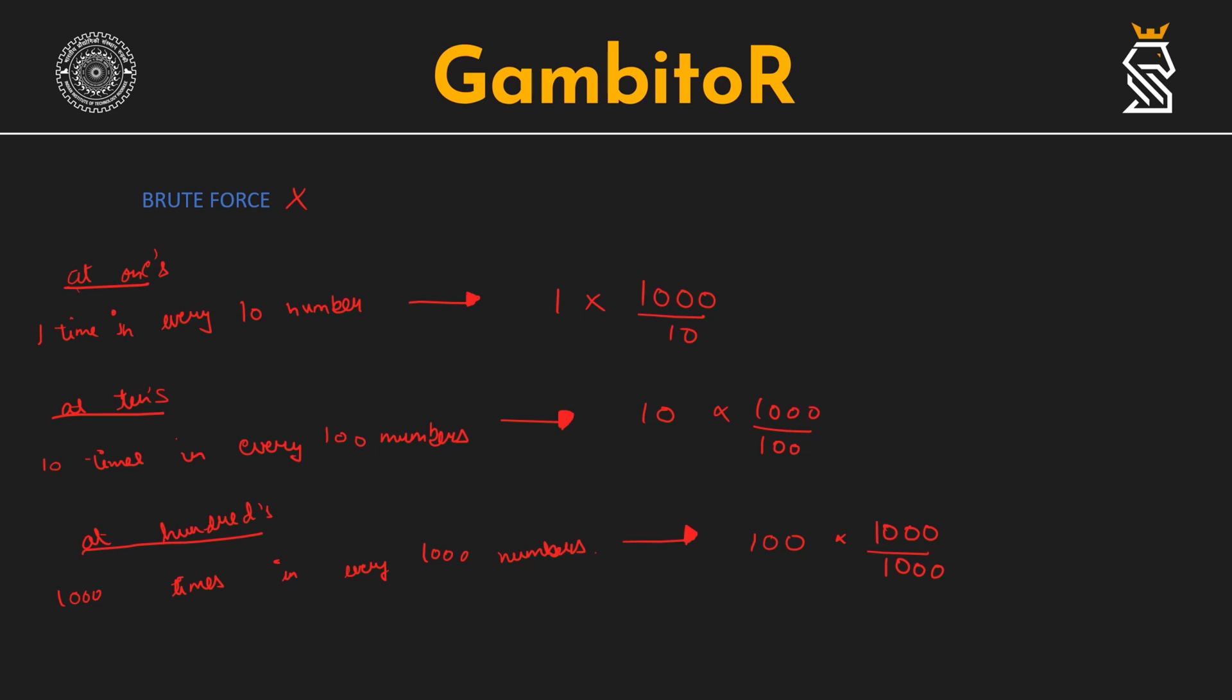Number of times 5 occurs in writing 1 to 1000 would be equal to times it occurs while writing numbers from 0 to 999. Since 5 does not occur in 0 and neither in 1000, our count will remain the same. These are all the possible 3 digit numbers, if we consider 0, 0, 0 to 9, 9, 9. Now, there is 1s digit, 10s digit and 100s digit.